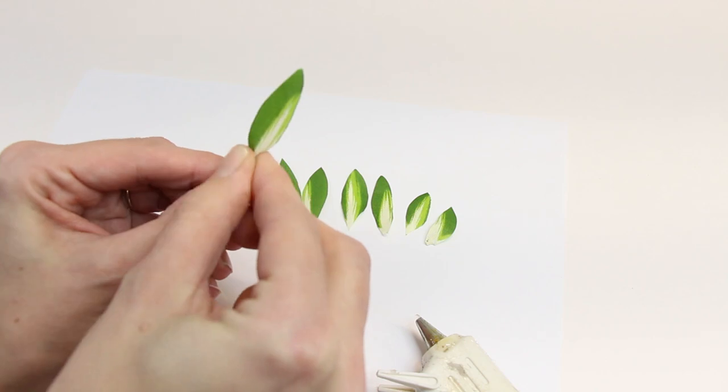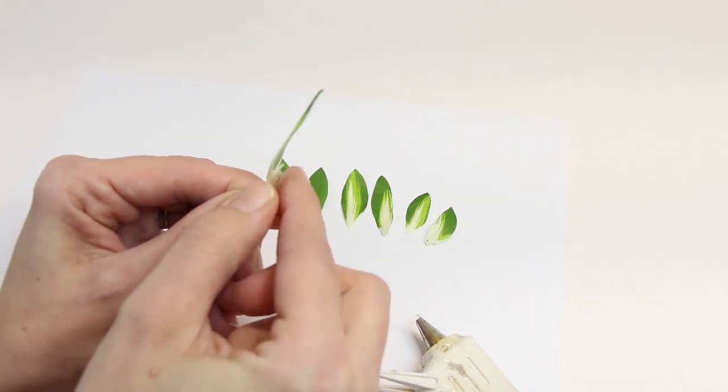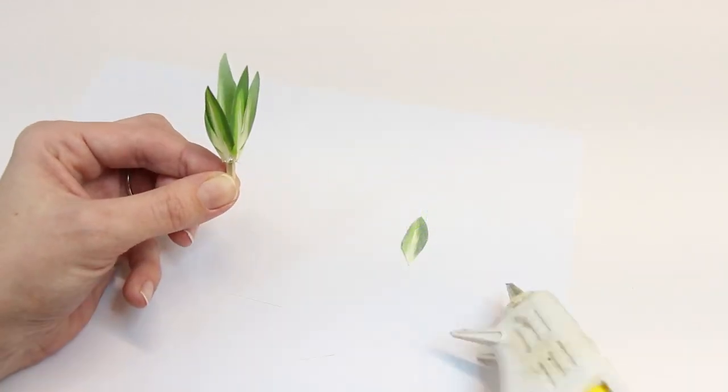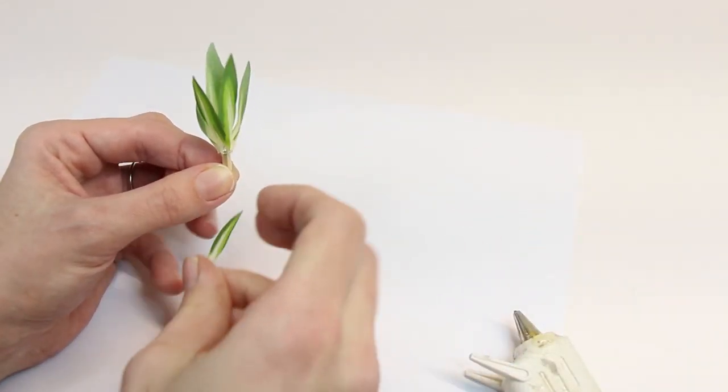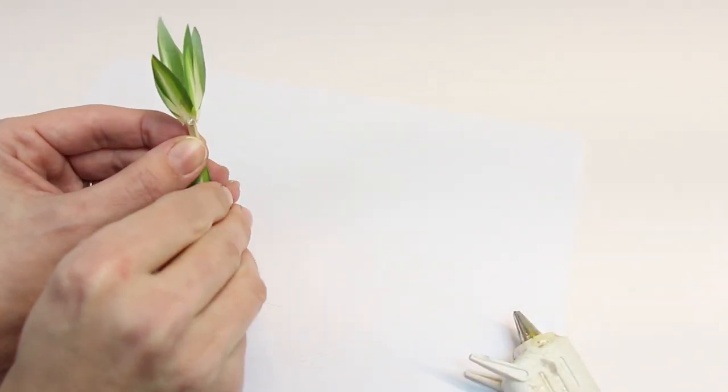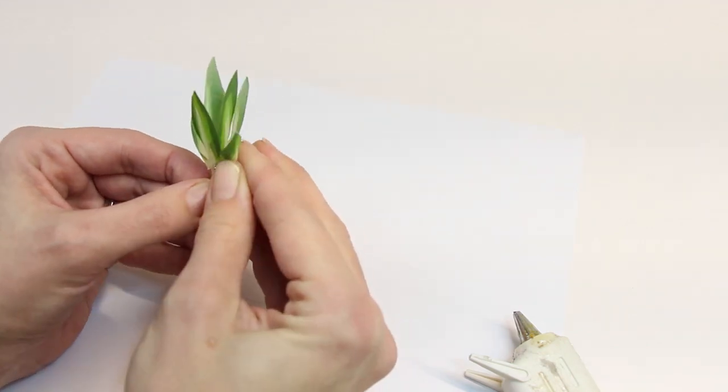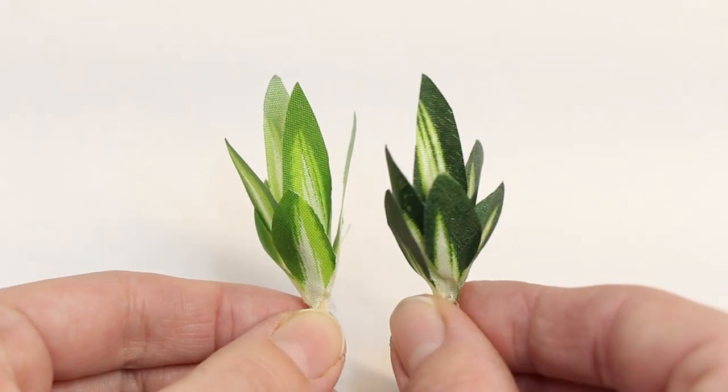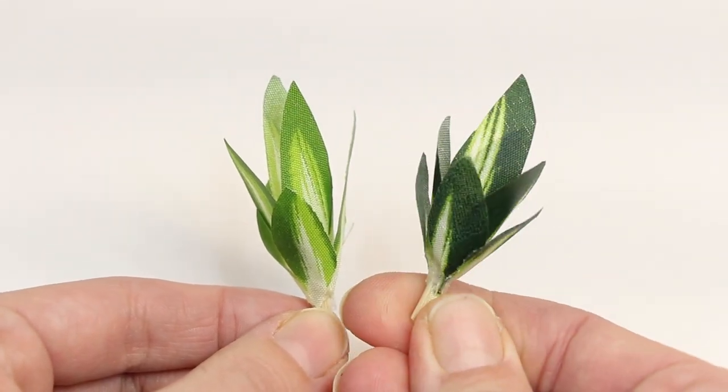You can pinch the leaves while the glue is still warm to give it some more shape. Continue to glue all the leaves on, making a small snake plant. You can use the other piece to make a darker version.